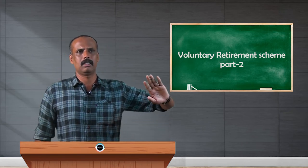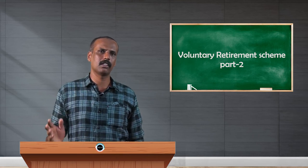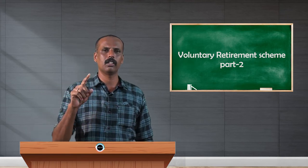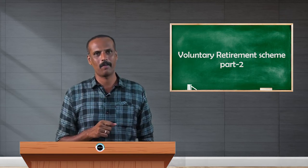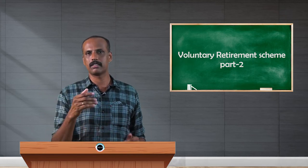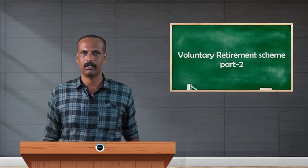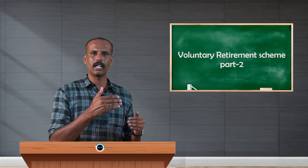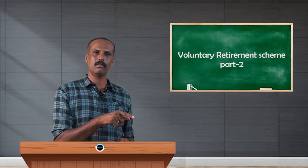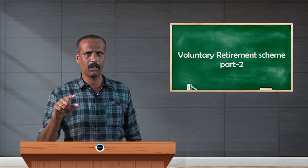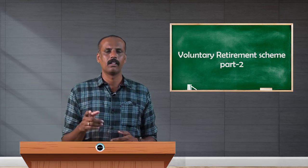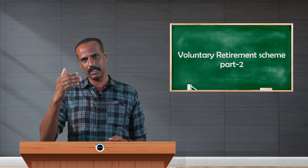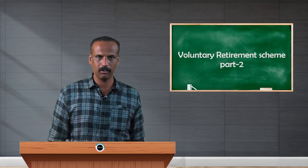For example, if an employee has completed 18 years of service and still has 3 years remaining, then 3 years × 12 months = 36 months is taken. We must use months, not years. Out of these two sub-amounts, whichever is higher becomes the third point. So, the least of: (1) actual compensation, (2) statutory limit of ₹5 lakh, and (3) the higher of the two sub-amounts — is the exemption.